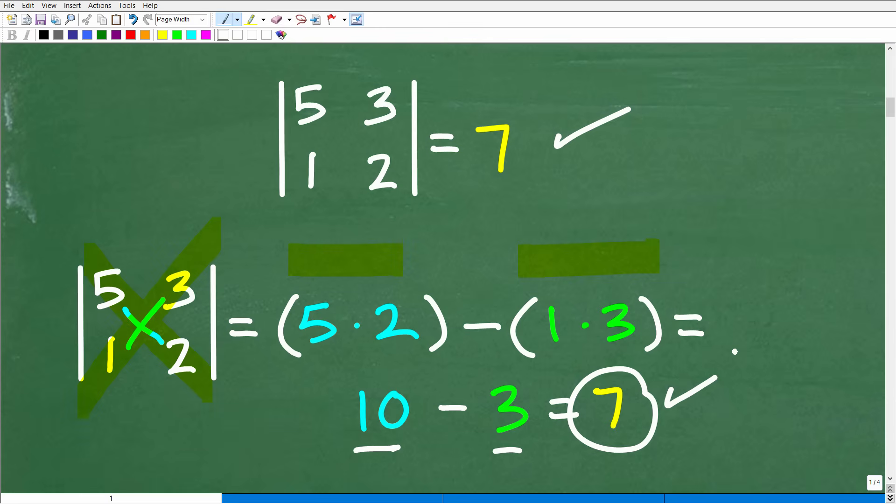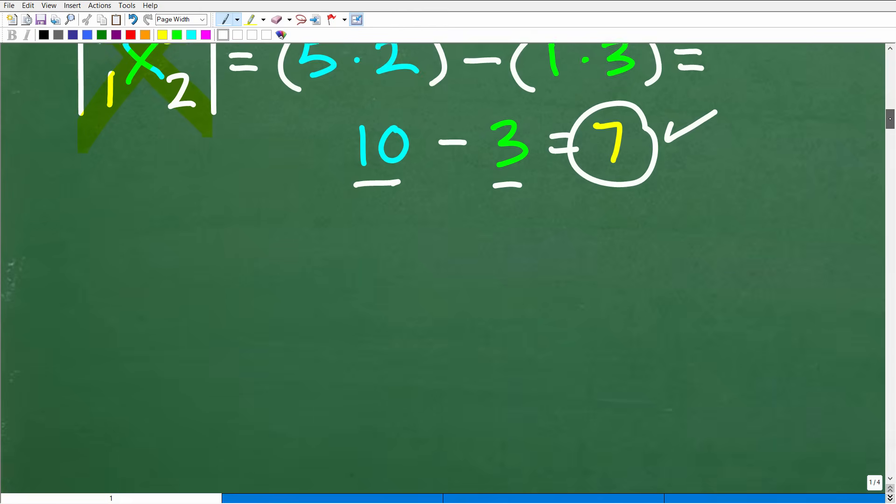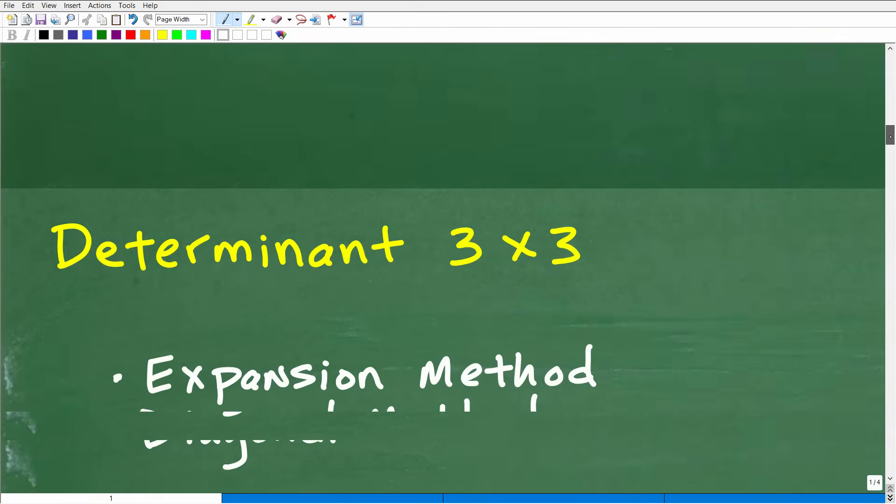That's all you have to remember. If you remember this particular pattern, you'll be good to go on finding the determinant of a two by two matrix. Super easy stuff. Now let's get into a three by three, and this is where it gets much more exciting.